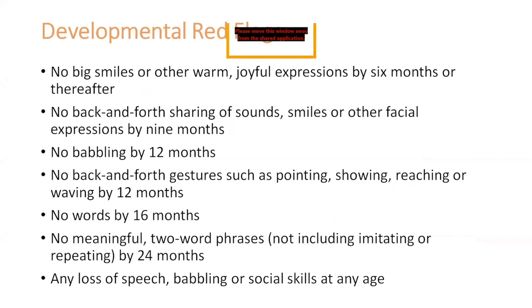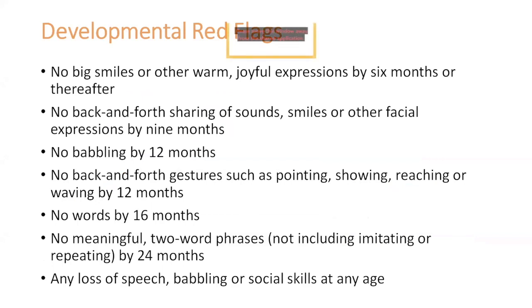The social smile — the joyful response when the caregiver smiles — typically comes by three months, so if you don't see it by six months, that is a developmental red flag. No babbling at all by 12 months is certainly a red flag. The first meaningful word, if it has not come between 16 to 18 months, is also a developmental red flag, in addition to the other ones on this slide.